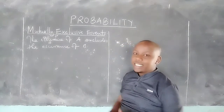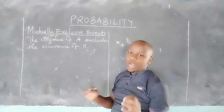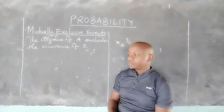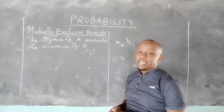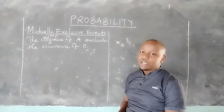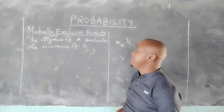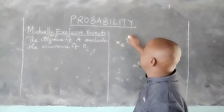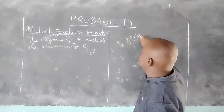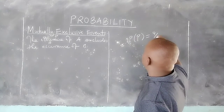In other words, it is either A or B that can occur. For example, consider the probability that a student will pass in a given exam.